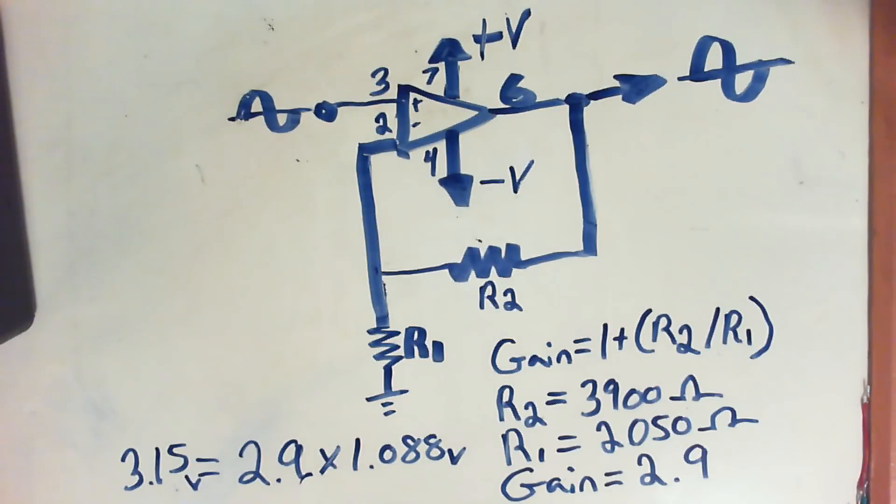The gain down here on the bottom is set by two resistors just as it was in the inverting op-amp, and here they are: R2 and R1. R2 divided by R1 plus one equals gain.